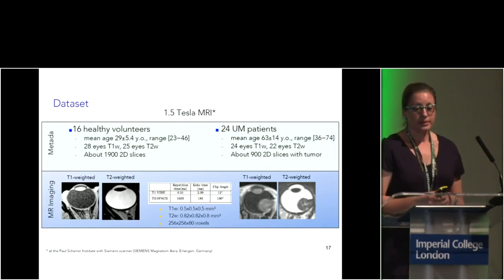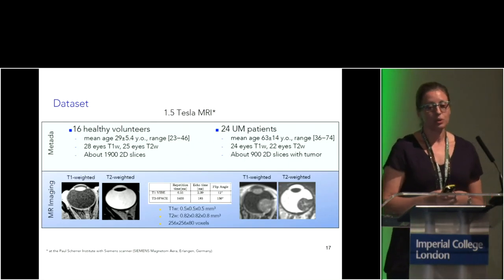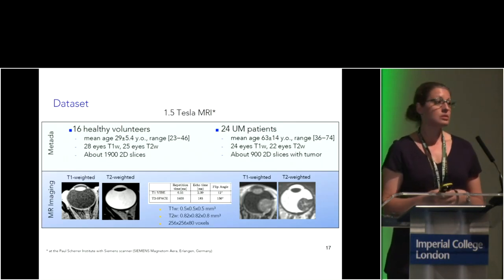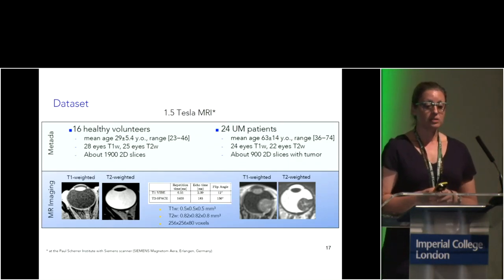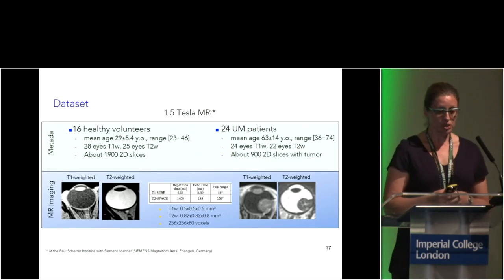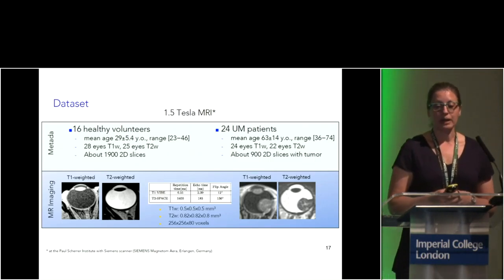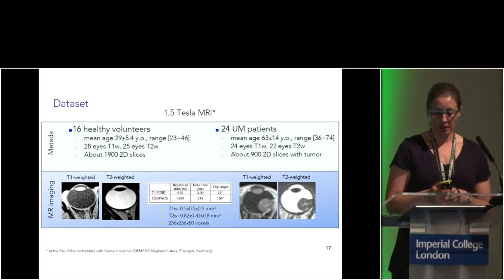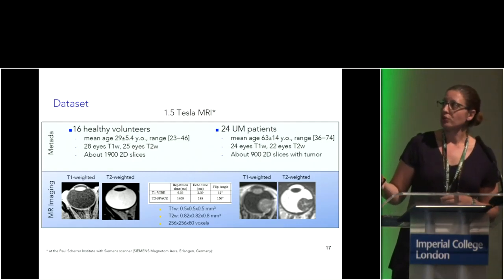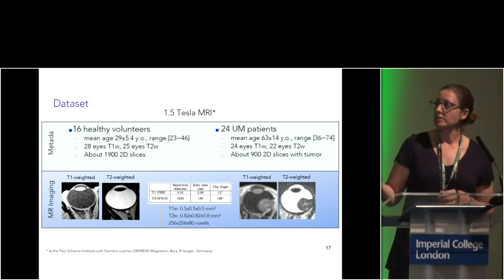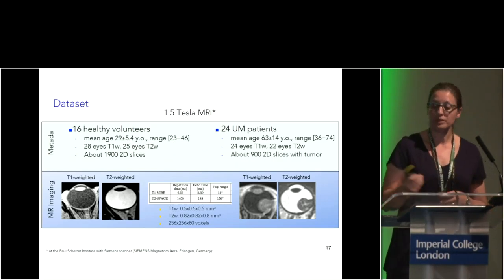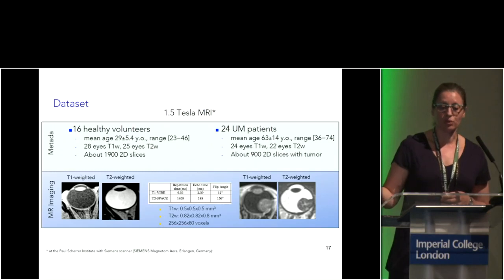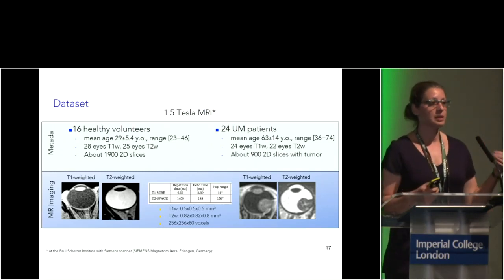Regarding the dataset: this was a dedicated study recruiting 16 healthy volunteers and 24 uveal melanoma patients. For the volunteers, we scanned both eyes as much as possible, ending up with 20 T1-weighted images and 25 T2-weighted images. For the uveal melanoma patients, we have 24 T1-weighted and 22 T2-weighted images. We have quite good spatial resolution — 0.5 isotropic for T1 and 0.88 isotropic for T2-weighted. Here you see examples of a healthy anatomy from a volunteer and of a patient acquired with the same MR sequence.